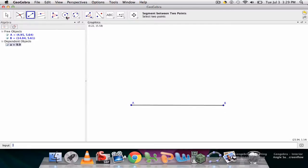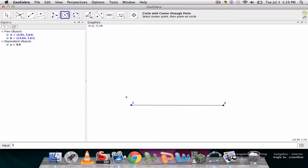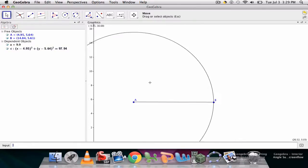Then I would scroll up here and use my circle with the center through a point tool. Here I'll choose to have my center at A with a radius of B. If I need to zoom in or out I can do that by scrolling up or down.